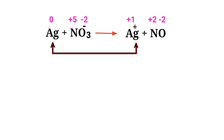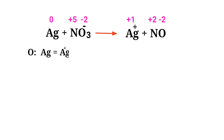In this equation, silver has a charge of zero and is changing to plus one, so silver is being oxidized. Nitrogen has a charge of plus five and is changing to plus two, so nitrogen is being reduced.